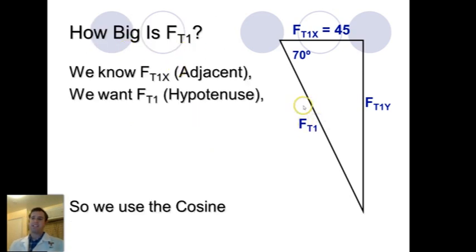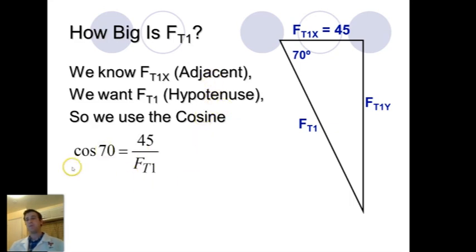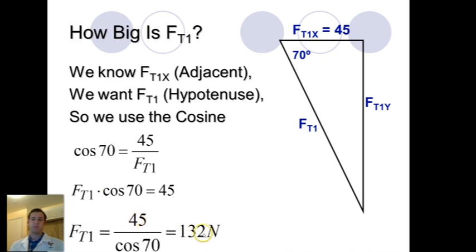So now, how big is this tension? Let's say that we just want to find this one for fun, just to find this side. Well, there's two different ways of doing it. This way that I'm going to show you here involves our Sokotoa. We know that our top part here, our adjacent side was 45. And we want to find the hypotenuse and the angle was 70 degrees. So I'm going to use my cosine to figure out my adjacent over hypotenuse. We plug those in. We multiply by the T1 on both sides. And then to get T1 alone, we have to divide by the cosine 70. And when we plug that into the calculator, we get 132 newtons. So the total force in this rope is 132 newtons.